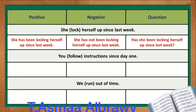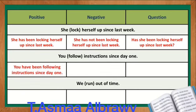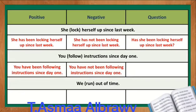The fourth one: You follow instructions since day 1. The verb is follow. The correct positive statement is: You have been following instructions since day 1. The negative sentence is: You have not been following instructions since day 1. And the question is: Have you been following instructions since day 1?